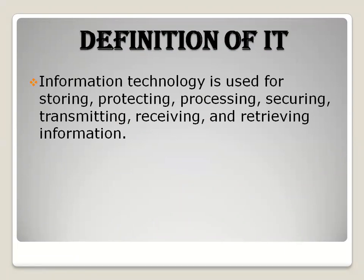Whatever information you have, IT protects and processes it. When you want to give it to another person or use it for yourself, it processes it. It secures the data — meaning no one can illegally handle your information. You can also transmit, receive, and retrieve information, such as exchanging emails or ideas with the help of IT.